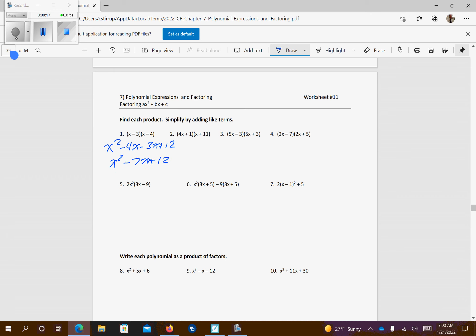This one is one of our special ones, so we just have to multiply the first and the last, so we get 25x squared minus 9.